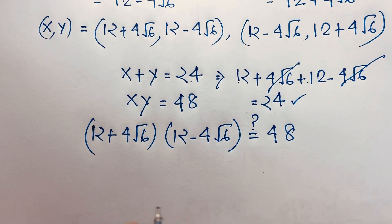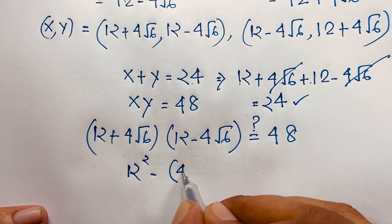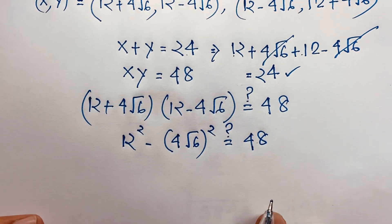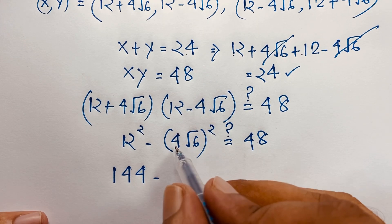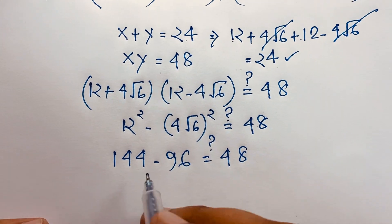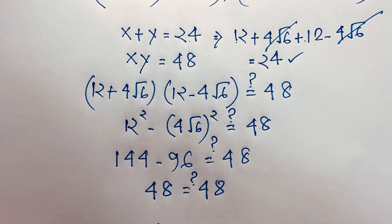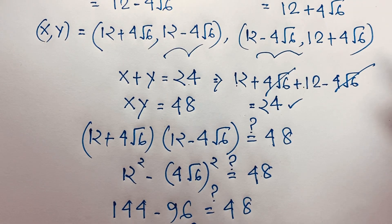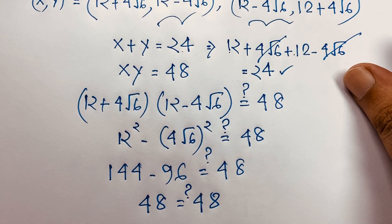For xy: (12 plus 4 square root 6)(12 minus 4 square root 6) uses the identity (a plus b)(a minus b) equals a squared minus b squared. So we get 12 squared minus (4 square root 6) squared, which is 144 minus 16 times 6, equaling 144 minus 96, which is 48. Left-hand side equals right-hand side. This is our final answer. Thank you all — if you enjoyed this Math Olympiad question, please subscribe to my channel. Goodbye, take care everyone.